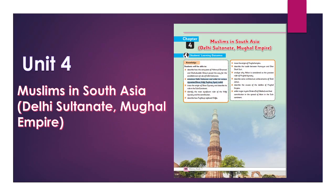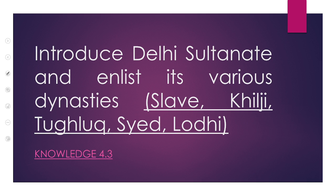My dear students, as you know that we are on unit number 4, jis mein hain Muslims in South Asia unko discuss kar rahe hain. Particularly, hum yeh dekh rahe hain ke kis tariqe se South Asia mein Muslim Raj ka aghaz hua. Aaj ki lecture mein knowledge 4.3 hum discuss karenge, in which you will be able to introduce the Delhi Sultanate and enlist its various dynasties: Slave, Khilji, Tughlaq, Sayyid, and Lodis.